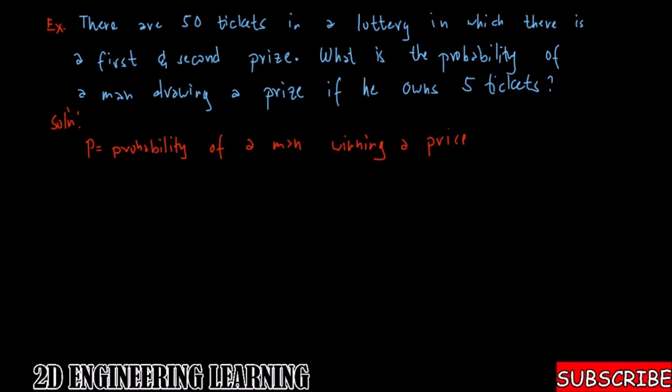If we go back to our problem, there are 50 tickets and the man has two chances of winning. So his initial probability is P = 2/50, since he has two tickets which he could win, either first or second prize. So that is 2 out of 50 chances.